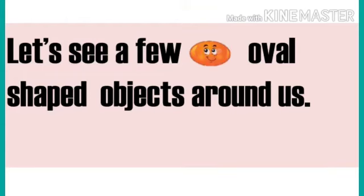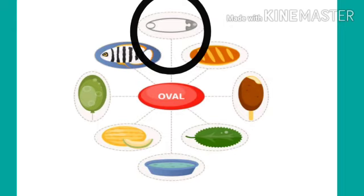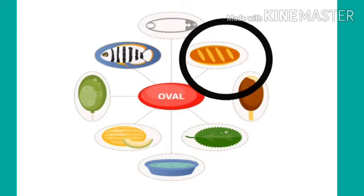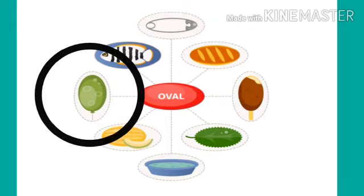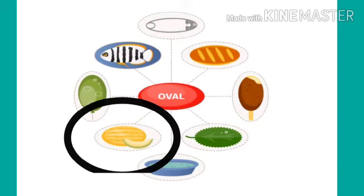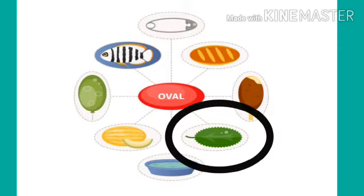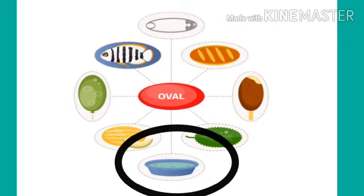Now children, let's see a few oval shaped objects around us. I will circle the pictures that look like ovals. An oval shaped safety pin, an oval shaped bread, an oval shaped balloon, an oval shaped ice cream candy, an oval shaped musk melon, an oval shaped leaf, an oval shaped tub.